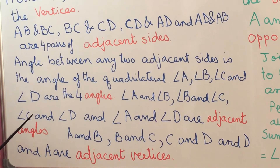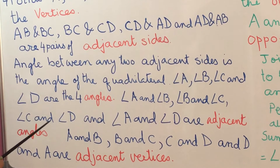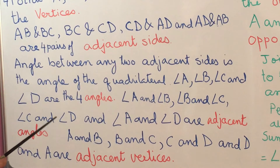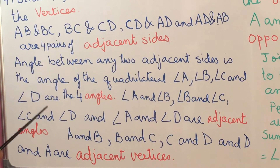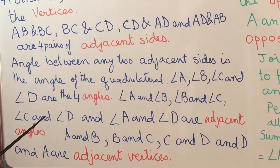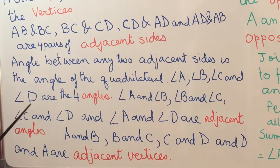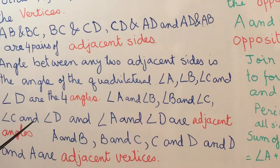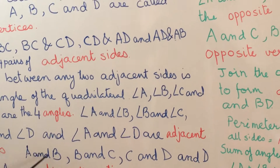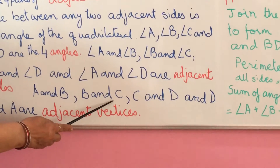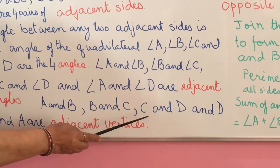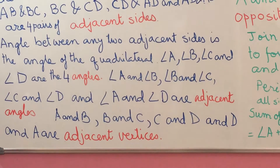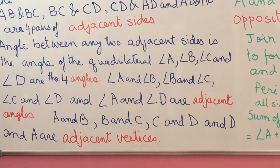Similarly, the vertices A and B, B and C, C and D, and D and A are next to each other, so they are adjacent vertices. We have A and B, B and C, C and D, and D and A as adjacent vertices.